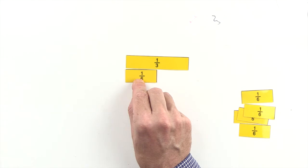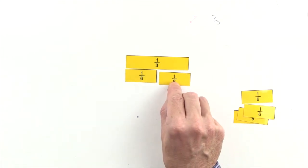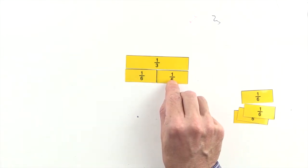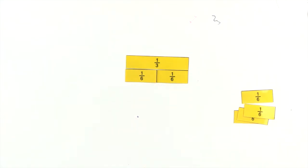1 sixth is less than 1 third, but 2 sixths are equal to 1 third. So 2 sixths and 1 third are equivalent fractions.